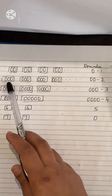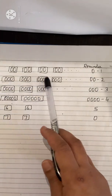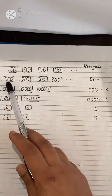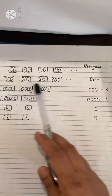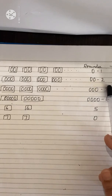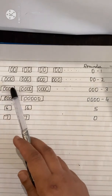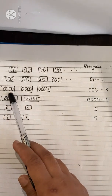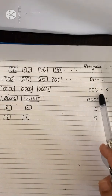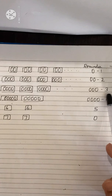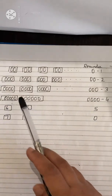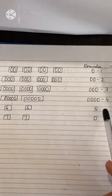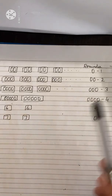If he is counting in 3s — 3, 6, 9 like that — he is counting in pairs of 3, then 2 eggs will remain in his basket. Like that, if he is counting in 4s, 3 eggs will remain in his basket. Counting in 5s — 5, 10, 15 like that — then 4 eggs will remain at the end.